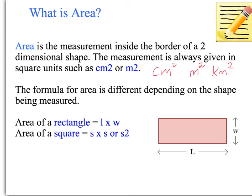The formula for area is different depending on the shape. For a rectangle, the area equals length times width. The area of a square is side times side, because each side has the same length — another way of writing that is side squared, which means side multiplied by side. The area is the amount inside the border of the shape, whereas the perimeter is just the fence on the outside.